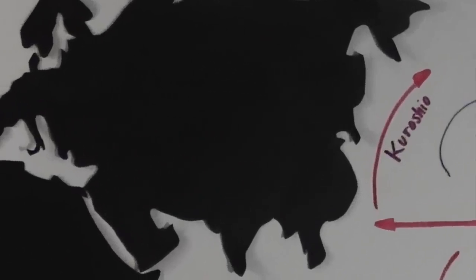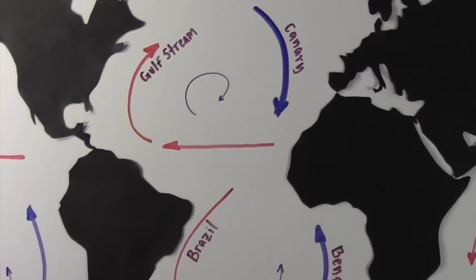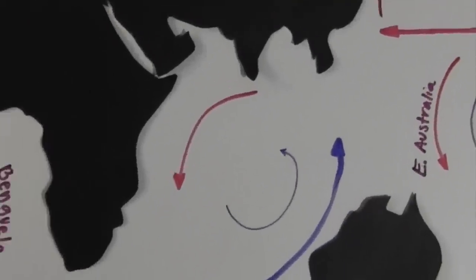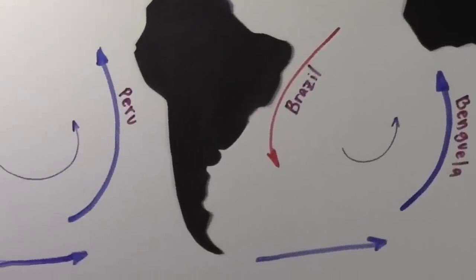The northern Pacific contains the Kuroshio Current and the California Current. The southern Pacific contains the East Australian Current and the Peru Current.